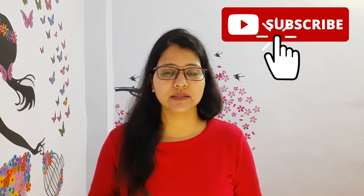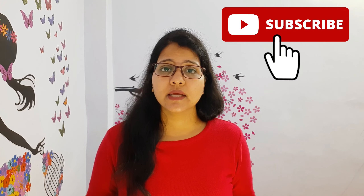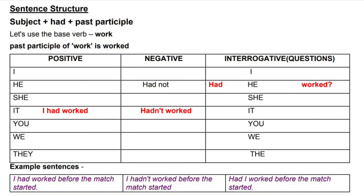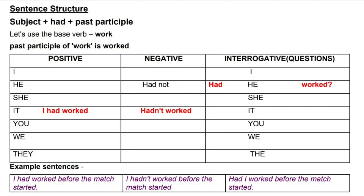Now let's move on to learn how to form positive, negative, and interrogative sentences using this tense. We will use the base verb 'work' and look at how to form sentences using it. The sentence structure for positive sentences is: subject + had + past participle. No matter what the subject — I, you, we, they, he, she, it — we always use 'had.'